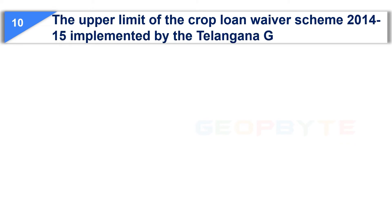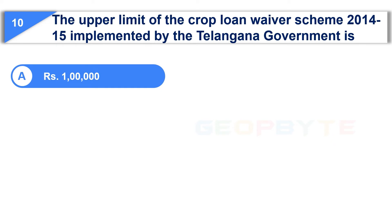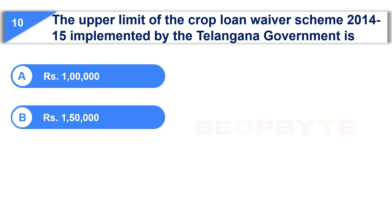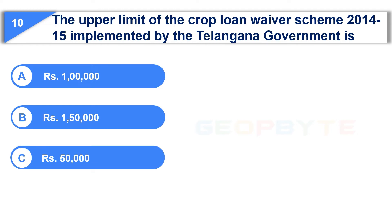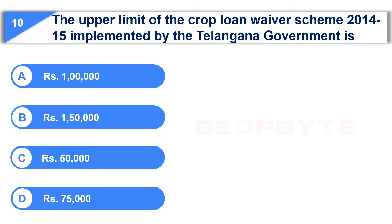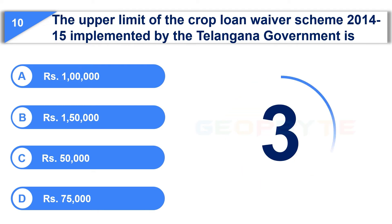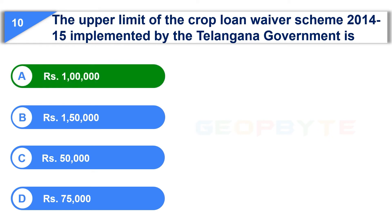The tenth question is: The upper limit of the crop loan waiver scheme 2014–15 implemented by the Telangana government is — Option A: Rupees 1 lakh. Option B: Rupees 1 lakh 50,000. Option C: Rupees 50,000. Option D: Rupees 75,000. And the correct answer is Option A: Rupees 1 lakh.